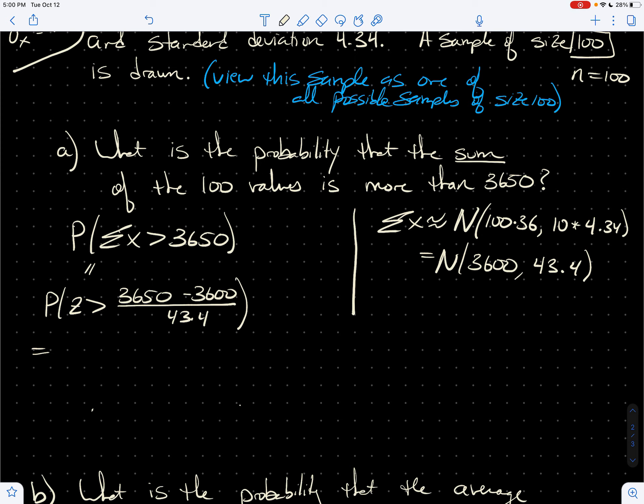And that's 1.15. So this is the probability that z is greater than 1.15207. We'll just use the first two decimals. We can round to 1.15 for our table.